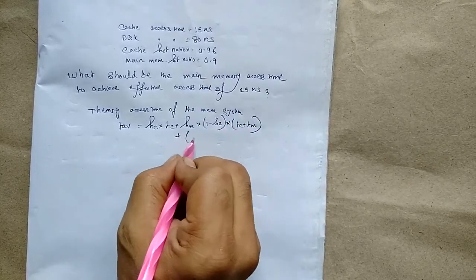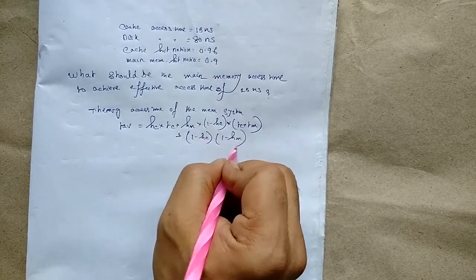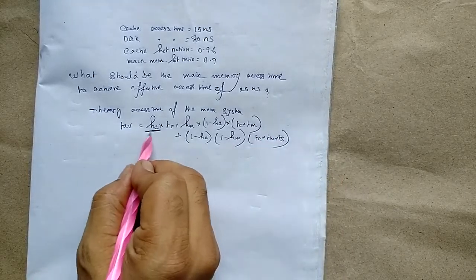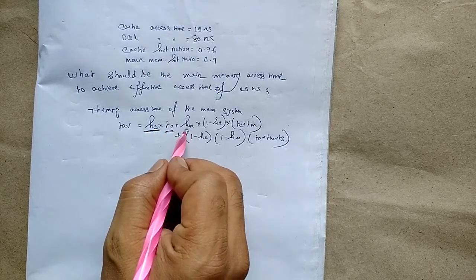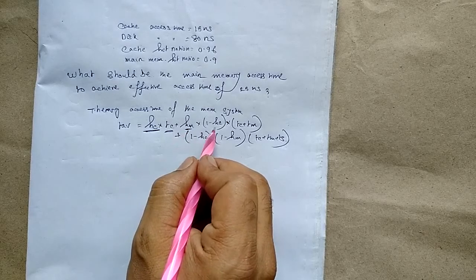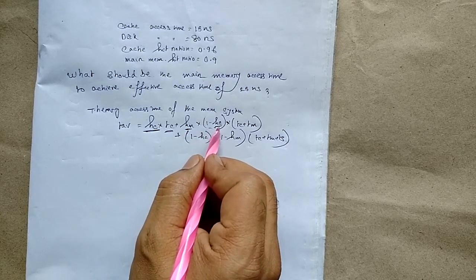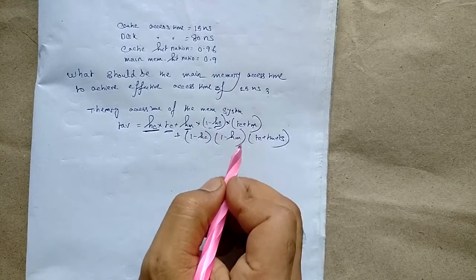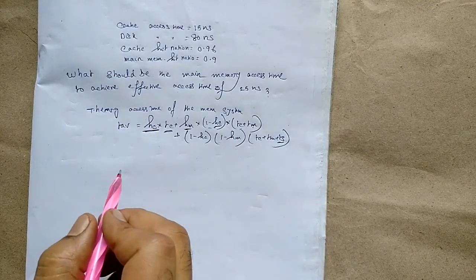Plus (1 − Hc) × (1 − Hm) × (Tc + Tm + Ts). Here Hc is the hit ratio of the cache, Tc is the time to access from cache memory, Hm is the main memory hit ratio, (1 − Hc) is the miss ratio, and Tm is the time to access from main memory.